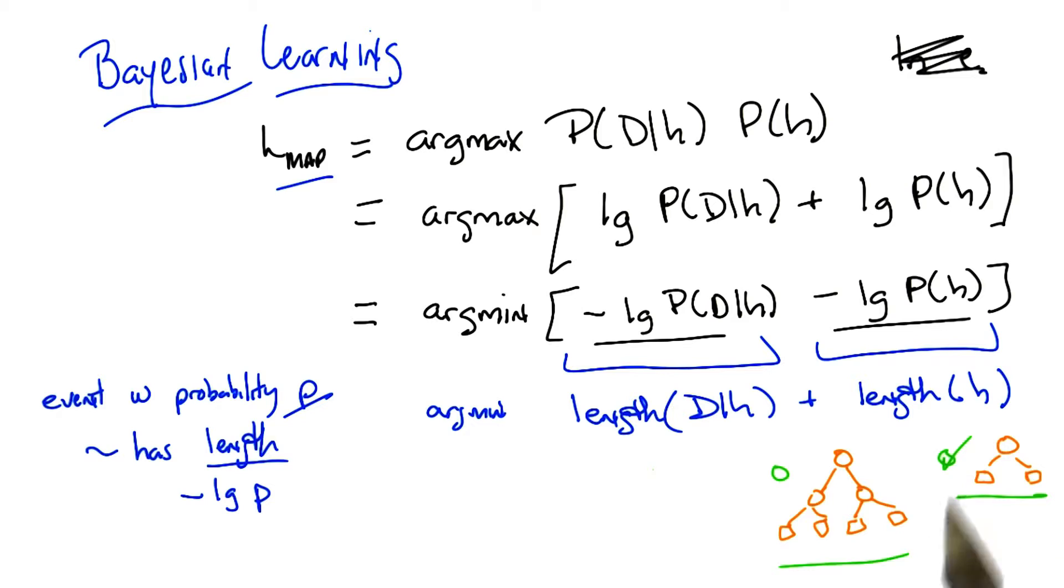Now, what about this over here? What does it mean? I think this is pretty straightforward. You got this, right? That the length... I mean, I guess what's weird is that you're moving back and forth between a notion of a prior, which is where the P(h) came from, and a notion of...